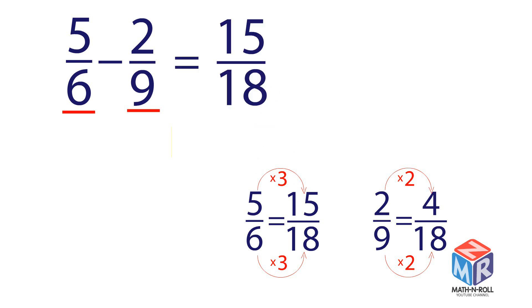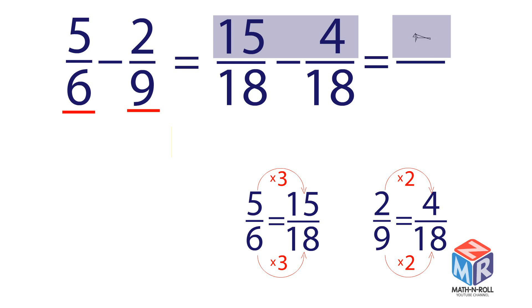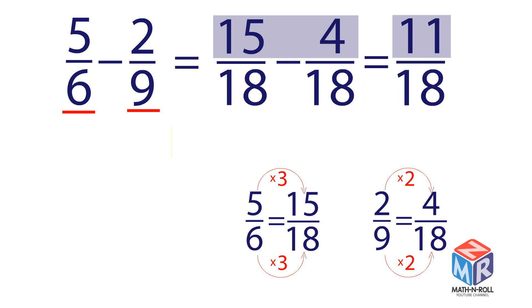Then subtract 4 over 18 from 15 over 18. Subtract the numerators and keep the denominator the same. The answer is 11 over 18.